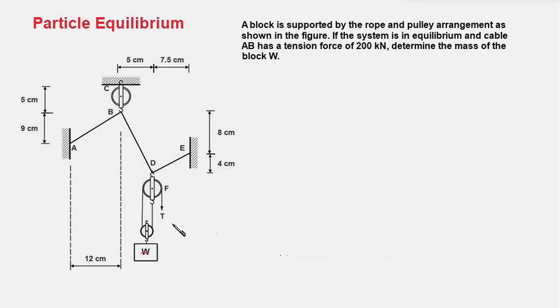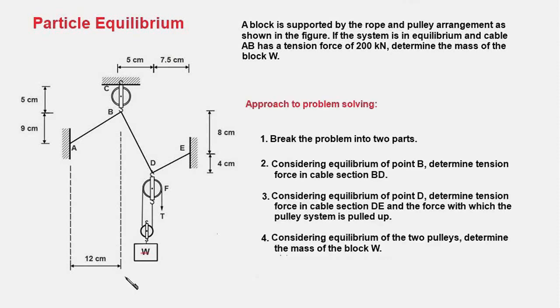The first step is to break the problem into two parts so that it becomes easier to handle each part. The next step is to consider equilibrium of point B of the cable, and the purpose in doing so is to find the tension in the cable section BD.